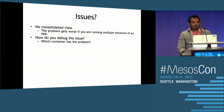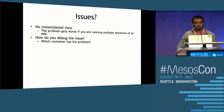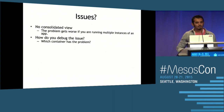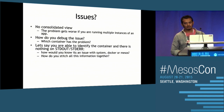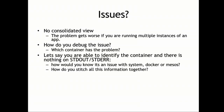If you have to debug an issue, how do you identify which container is having the issue for a particular app? You basically go to the UI, identify the container, and do all of that. But let's say you don't see anything on standard out and standard error — how do you debug the issue then? How do you find out whether the issue is related to Docker, Mesos, or some system logs?